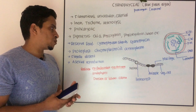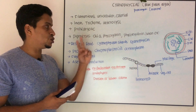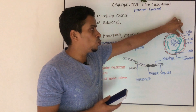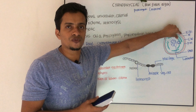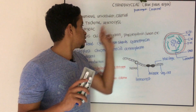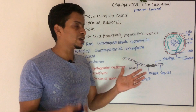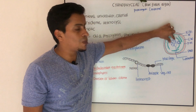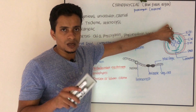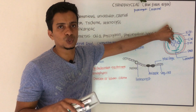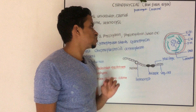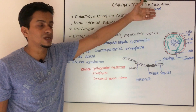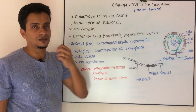The protoplast is differentiated into two parts: outer chromoplasm, which consists of the pigments — Chlorophyll A, phycocyanin, phycoerythrin, etc. — and inner centroplasm. In the centroplasm you can see genetic material, ribosomes, etc. So the protoplast is divided into chromoplasm (outer) and centroplasm (inner).